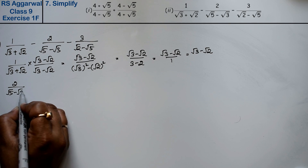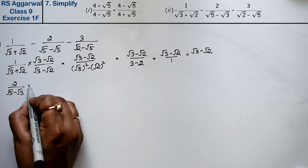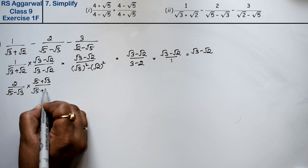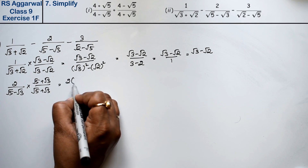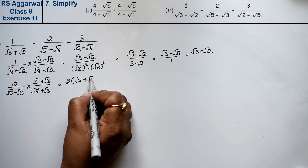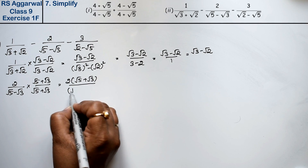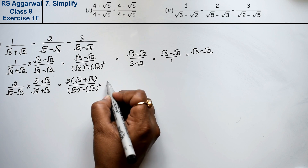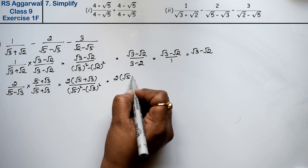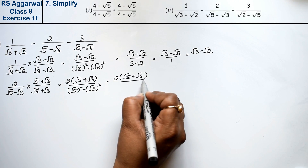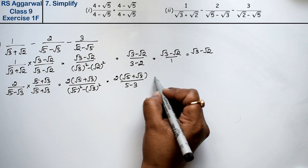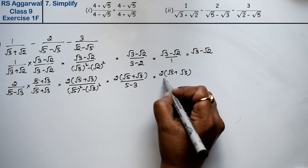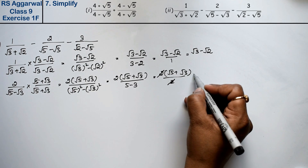Next, for 2/(√5 - √3), we rationalize by multiplying by (√5 + √3)/(√5 + √3). The denominator becomes 5 - 3 = 2. So we get 2(√5 + √3)/2 = √5 + √3.